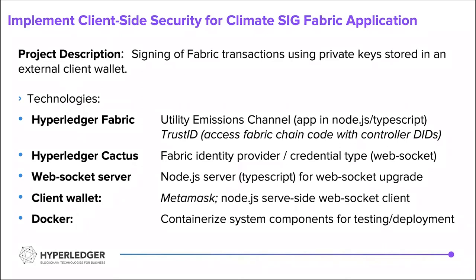The technologies we used: obviously Fabric, building on the Utility Emissions Channel, built in Node.js and TypeScript for the BCA project. We also considered working with a technology called TrustID, which is basically Hyperledger Fabric chaincode. We also integrated our final solution into Hyperledger Cactus — this wasn't a requirement, but Hyperledger Cactus is a useful integration tool for cross-chain or DLT compatibility.